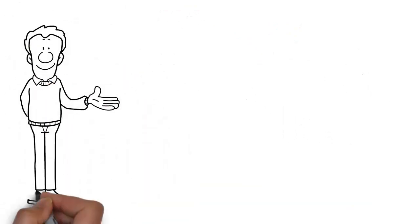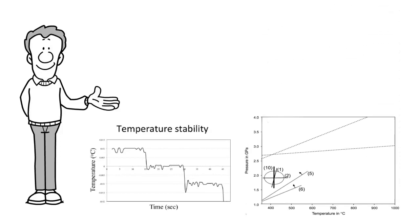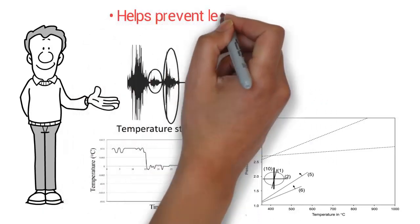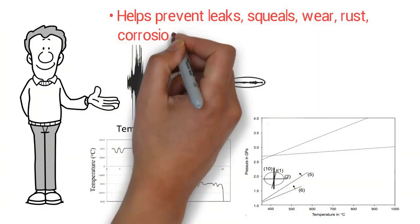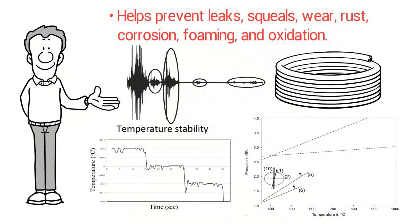What is the benefit of central hydraulic fluid? Optimized temperature stability maintains performance in high and low temperature conditions. Outstanding reduction of wear and noise helps prevent leaks, squeals, wear, rust, corrosion, foaming, and oxidation. It protects against seal and hose deterioration.